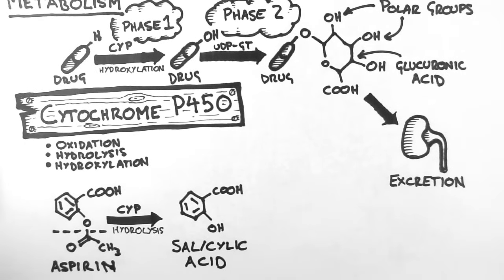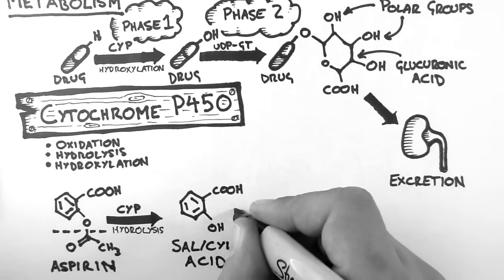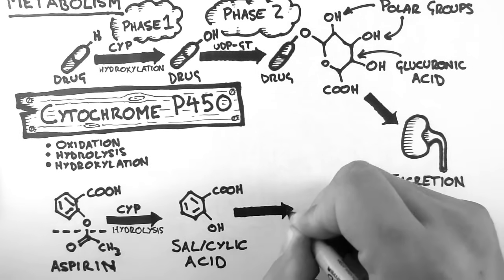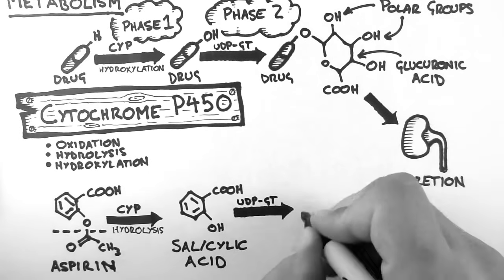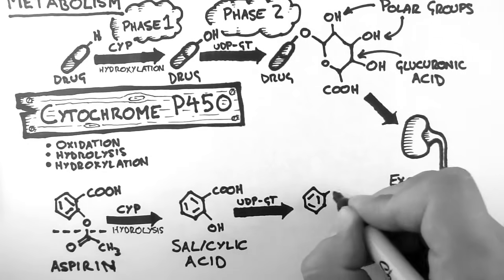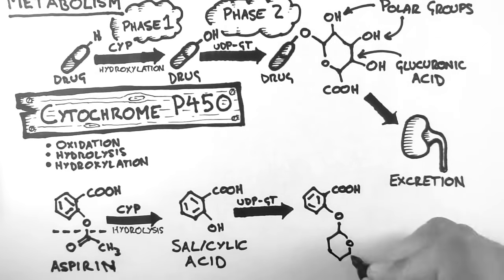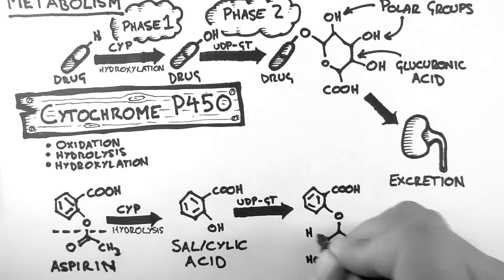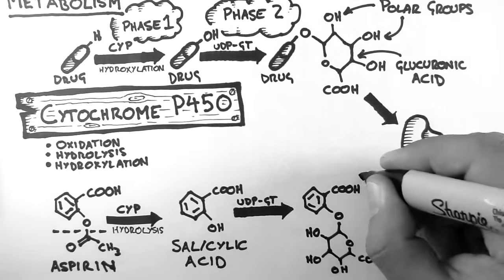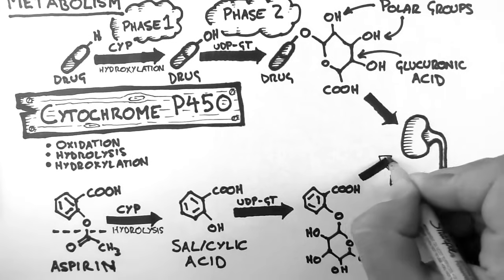This is particularly interesting as salicylic acid is the active drug. In other words, aspirin needs to be metabolized before it has any effect. Because of this, we call aspirin a prodrug. Salicylic acid can then be acted upon by UDP glucuronosyl transferase to attach the glucuronic acid group in place of the hydroxyl group. Now the product can easily be excreted by the kidneys.